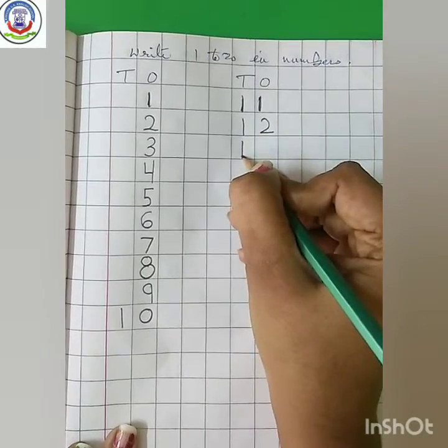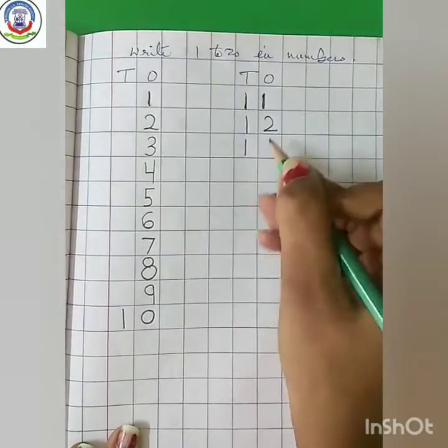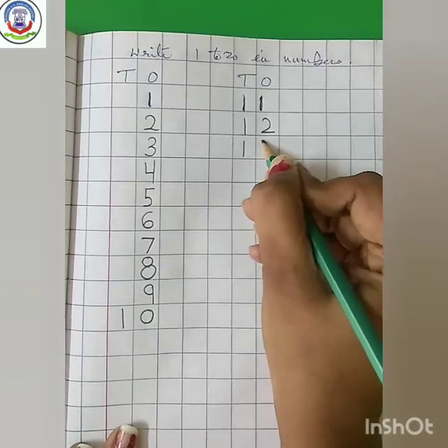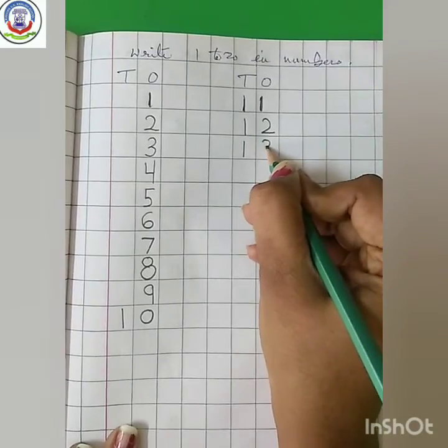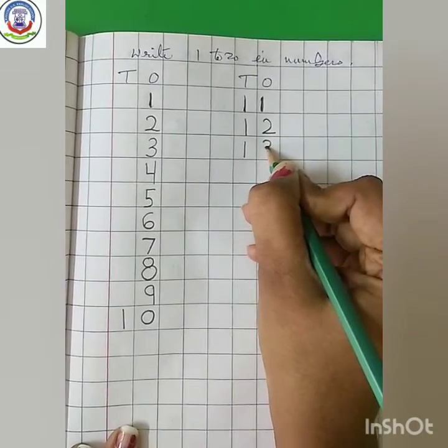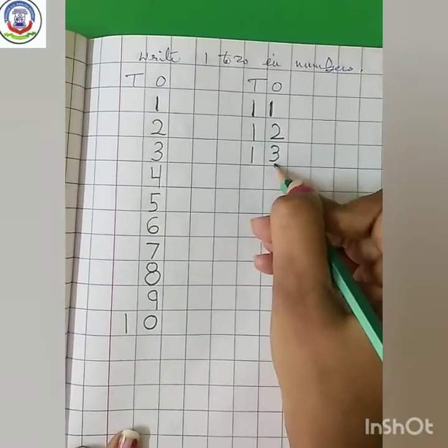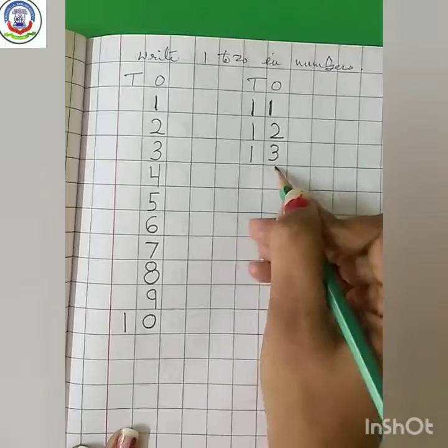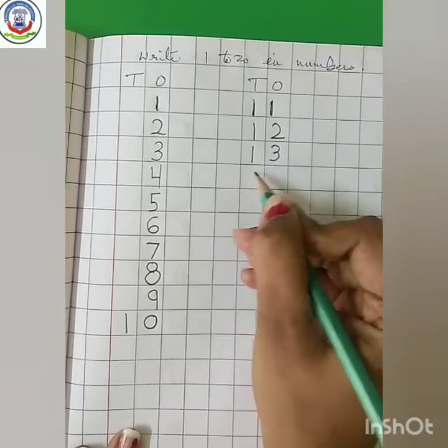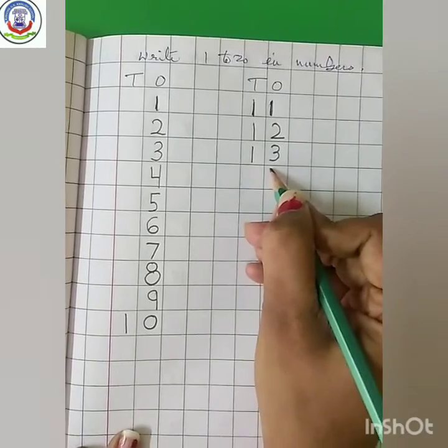10 plus 3 is 13. Next number. Standing line — 1. Make a curve and another curve — 3. 10 plus 3 is 13.